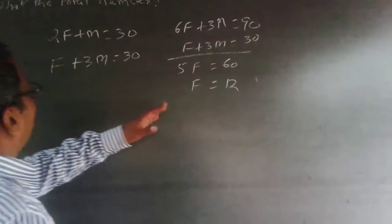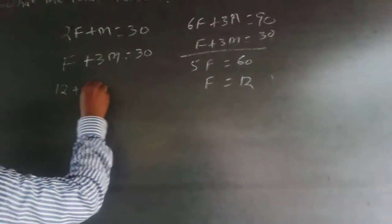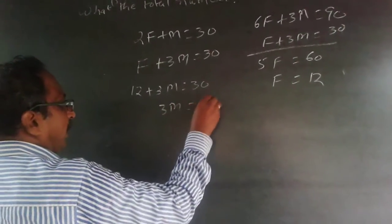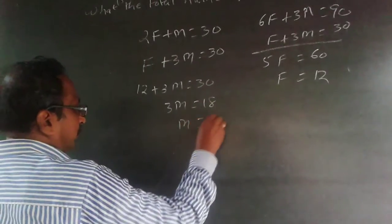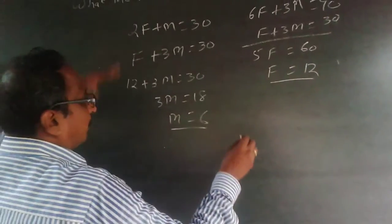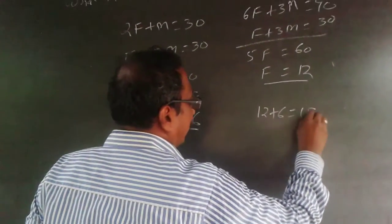Once you get F as 12, substitute it: 12 plus 3M equals 30, so 3M equals 18, M equals 6. Males are 6, females are 12. The total is 12 plus 6 equals 18.